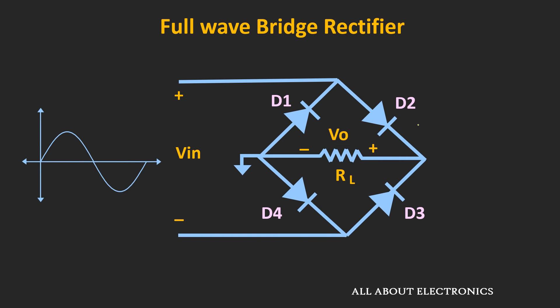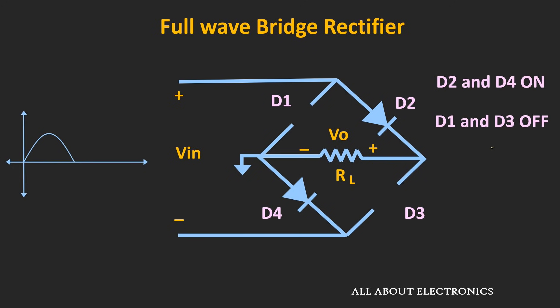Now let's see the second method using which we can design this full wave rectifier circuit. As you can see, this full wave bridge rectifier circuit consists of 4 diodes. If you compare this circuit with the previous circuit, it does not involve any transformer, and due to that the size of this circuit will get reduced. If we apply the sine wave as an input, then during the positive half cycle, diodes D2 and D4 will conduct while D1 and D3 will remain off. During the positive half cycle, the current will flow through this path. Assuming diodes D2 and D4 are ideal, this input voltage will appear across this load resistor, so the same input voltage will appear at the output terminal.